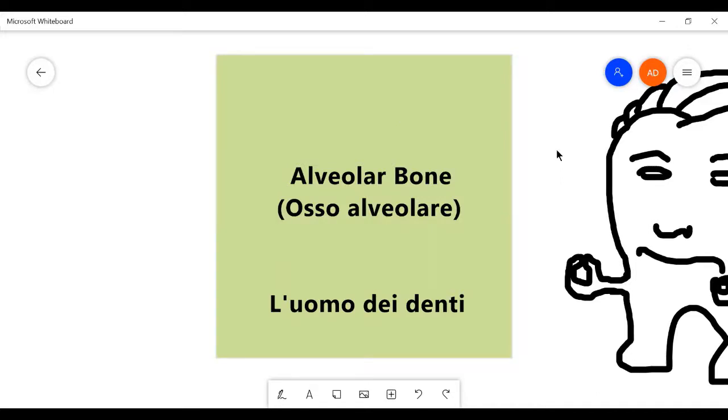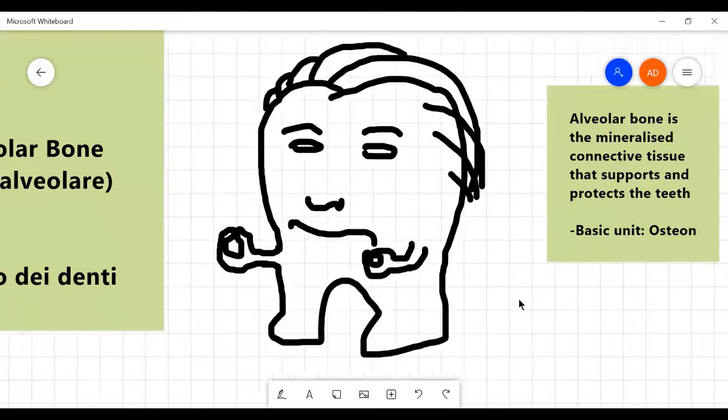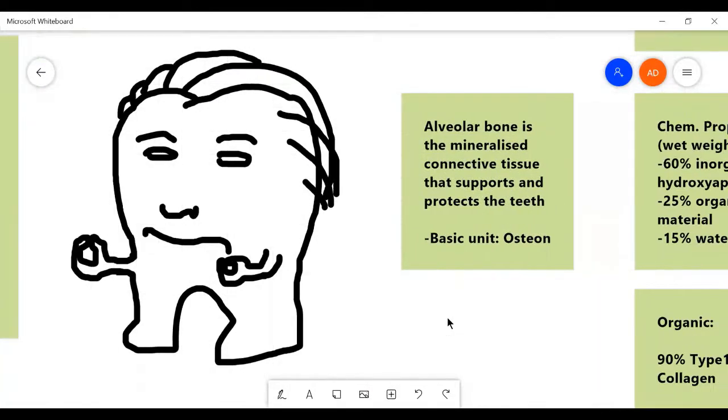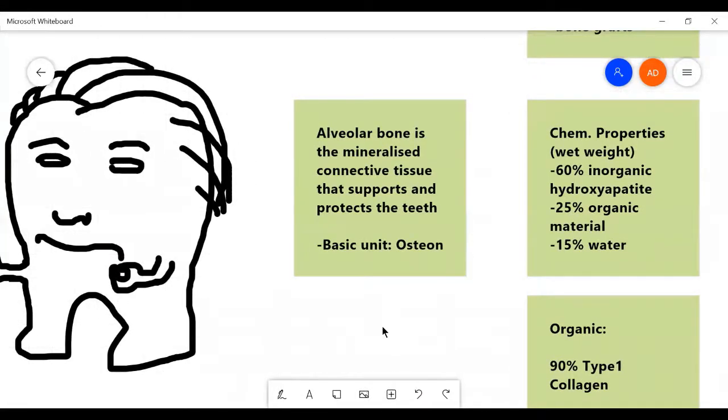Alveolar bone, or as we say in Italy, Osso alveolare by Luomo dei denti. Now today's lesson is going to be very Italian. I've been watching a lot of Francis Ford Coppola movies and I've become a part of their culture. Do you understand what I mean?